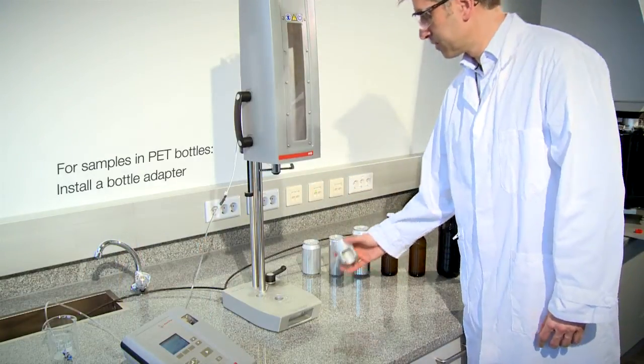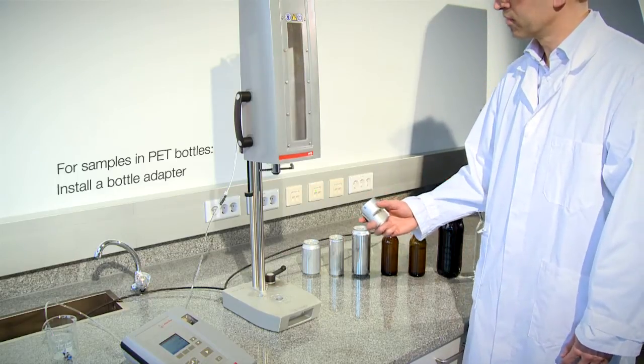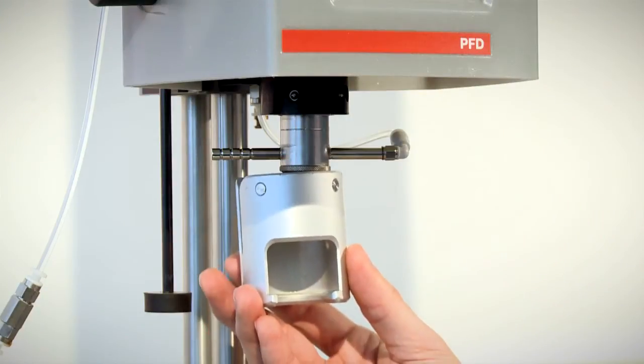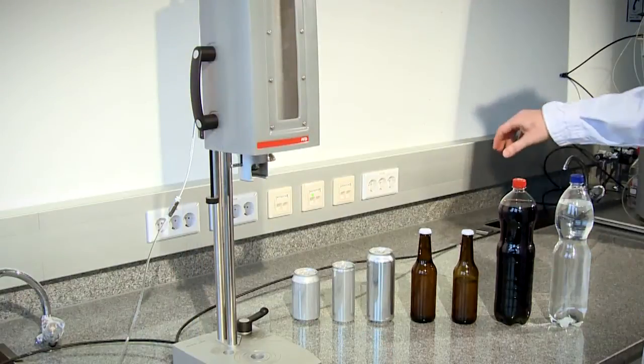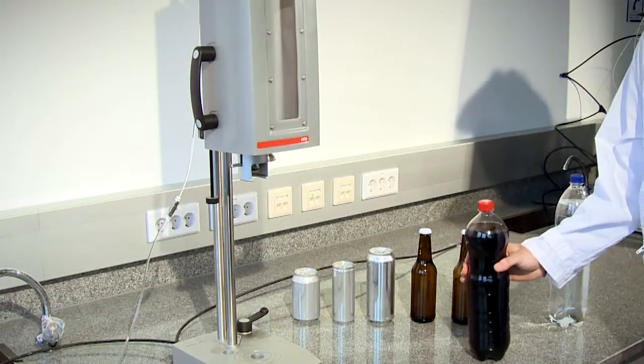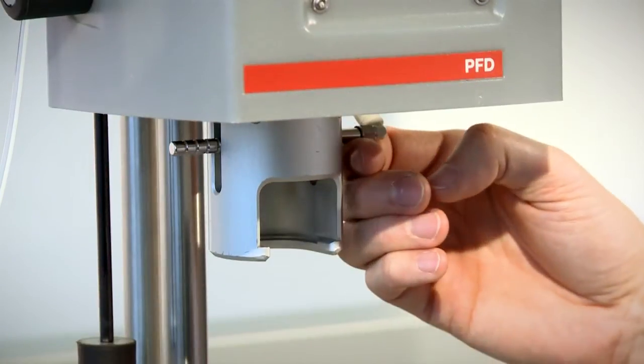For measuring a sample in a PET bottle, you require a so-called PET bottle adapter. As you can see, the adapter is easily installed. Now you can insert the bottle by fitting the cap into the adapter.